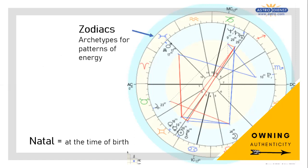So on the very outside of the wheel are the zodiac signs. So these are the chunks of the sky that belong to each zodiac sign. And those locations in the sky are archetypes for patterns of energy. So that zodiac, for example, the arrow in this case is pointed at Pisces.